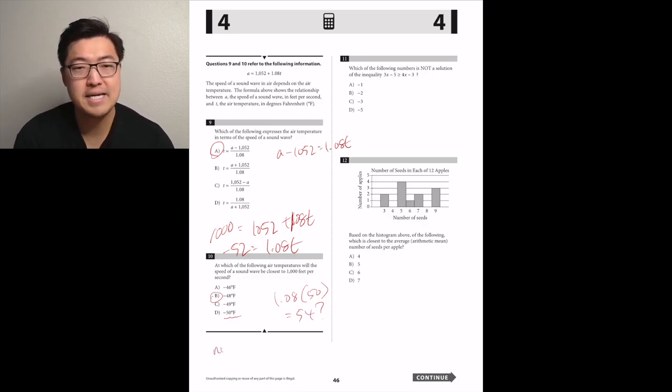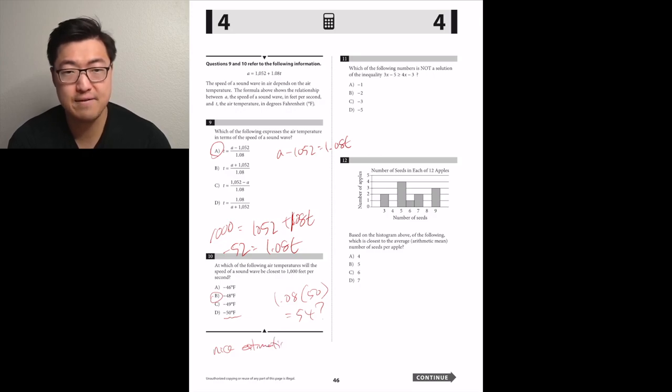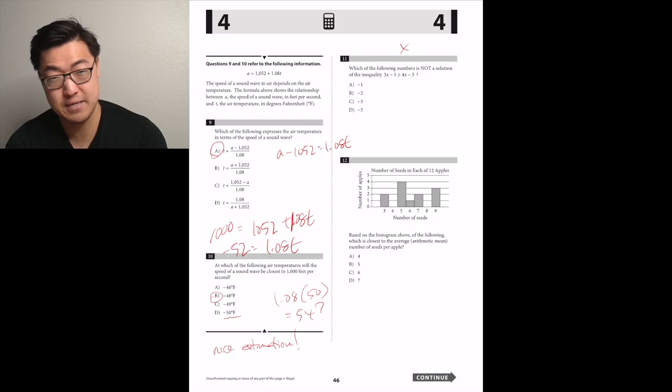Number 11. Which of the following numbers is not a solution of the inequality 3x minus 5 is greater than or equal to 4x minus 3? Let's just rearrange that. You'll get x is less than or equal to negative 2. So A, too big.